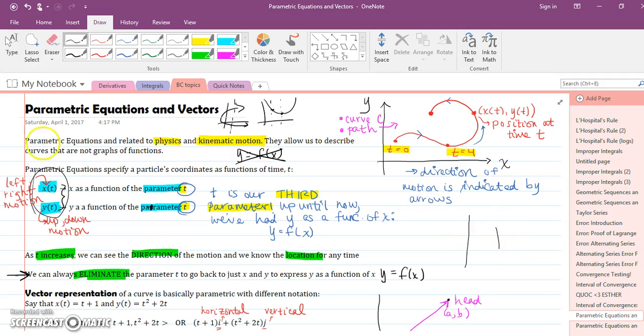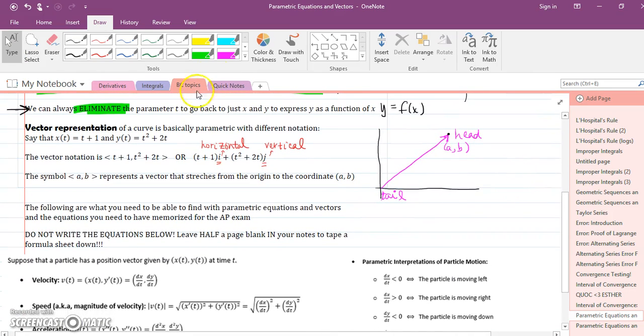Now vector representation is basically the same exact thing as parametrics except we use a slightly different notation. Now depending on your professor or your book in the future, you might use these arrows, not parentheses. They have to be arrows, or you might use IJ notation or I hat J hat where I is horizontal back and forth and J is vertical up and down. So before, if you're talking about just parametric equations, they're always going to be written like this. If you really want to write these as a vector, vectors always talk about the X and the Y, X, Y like this.